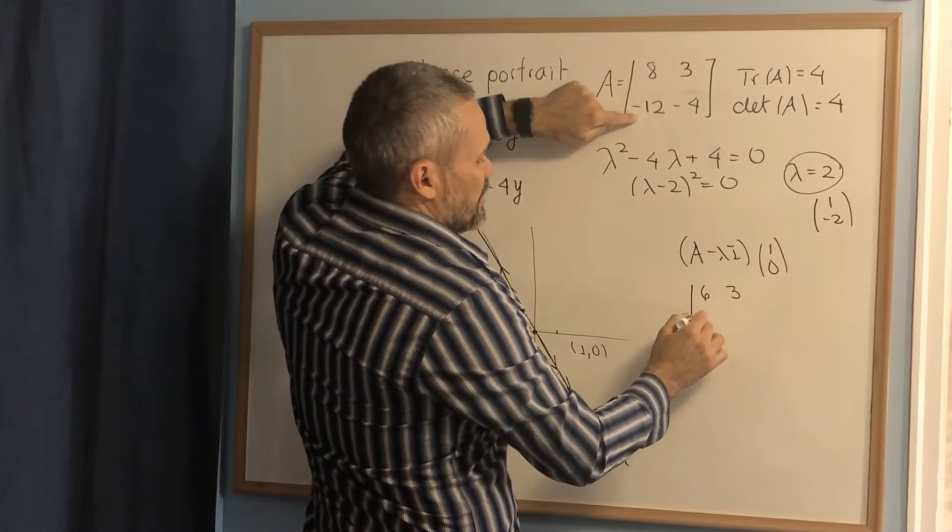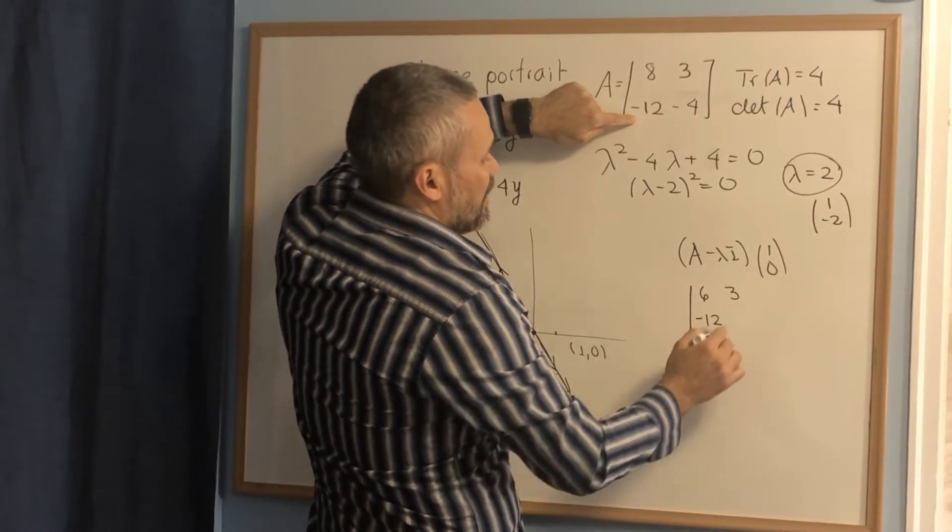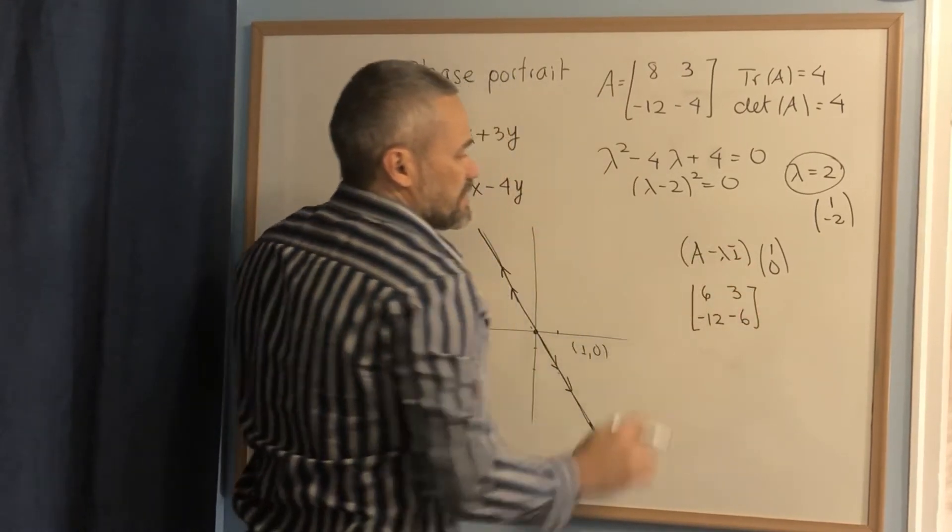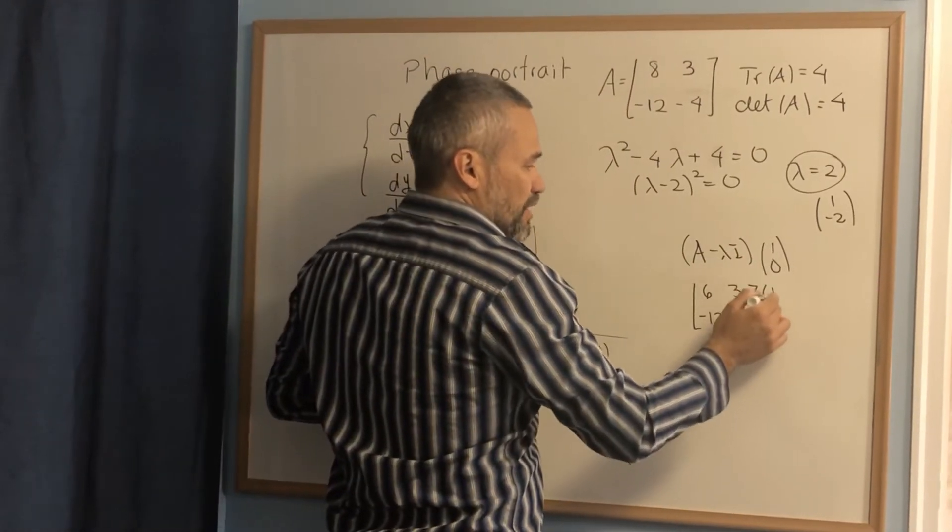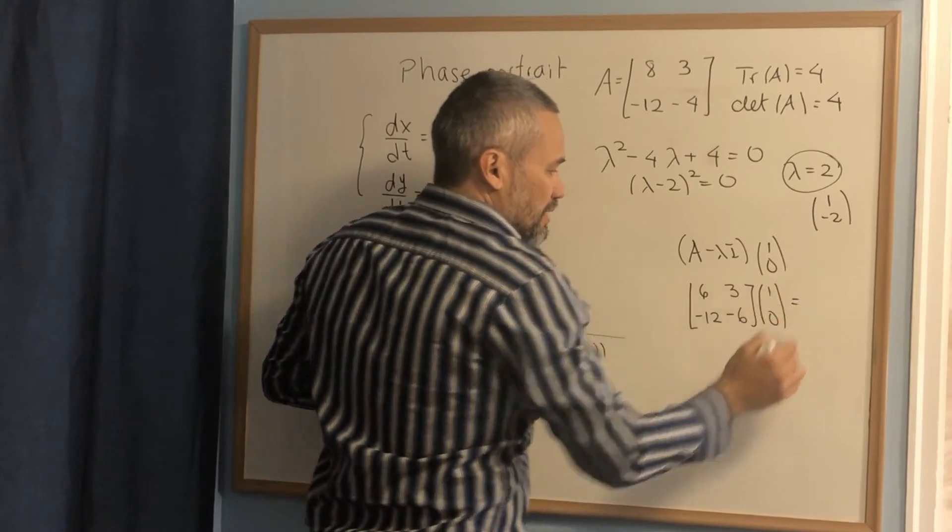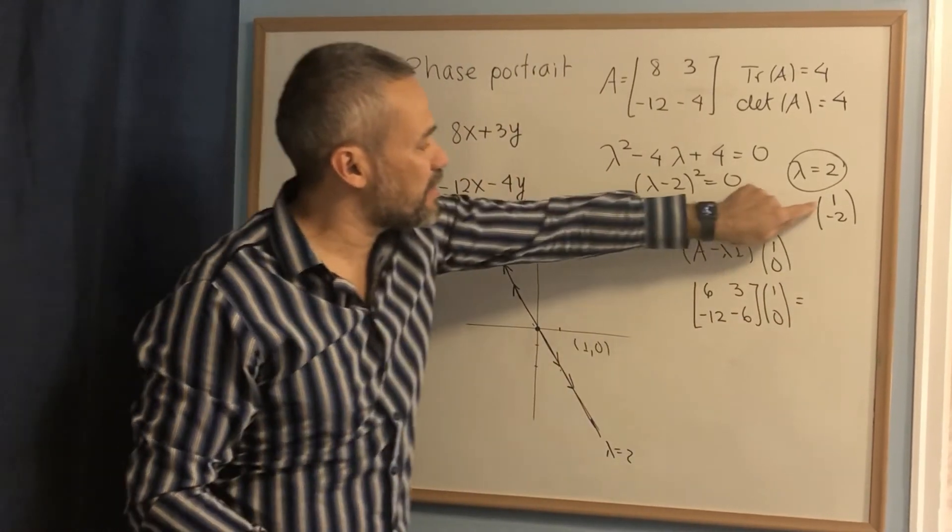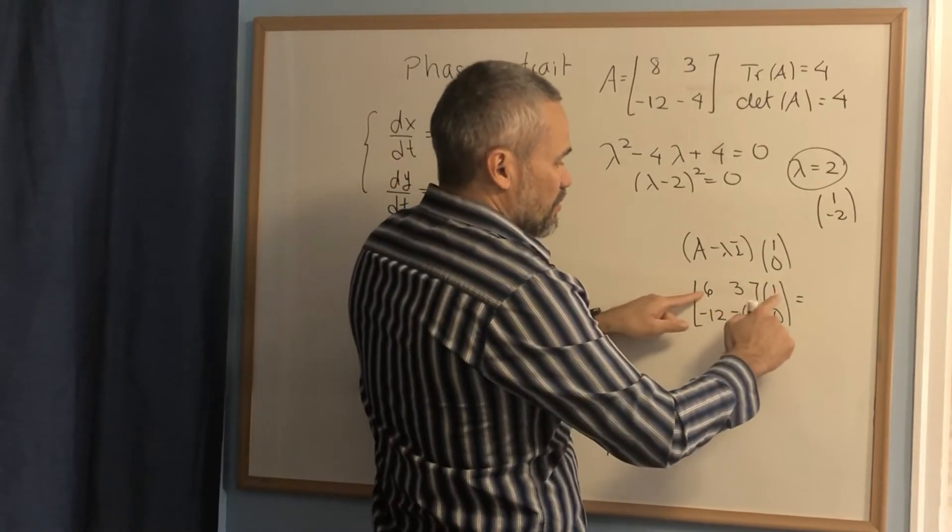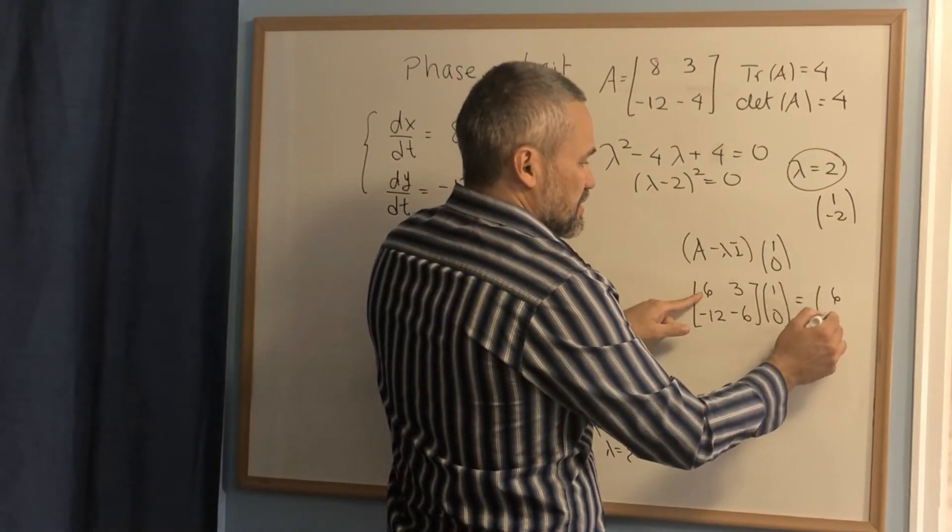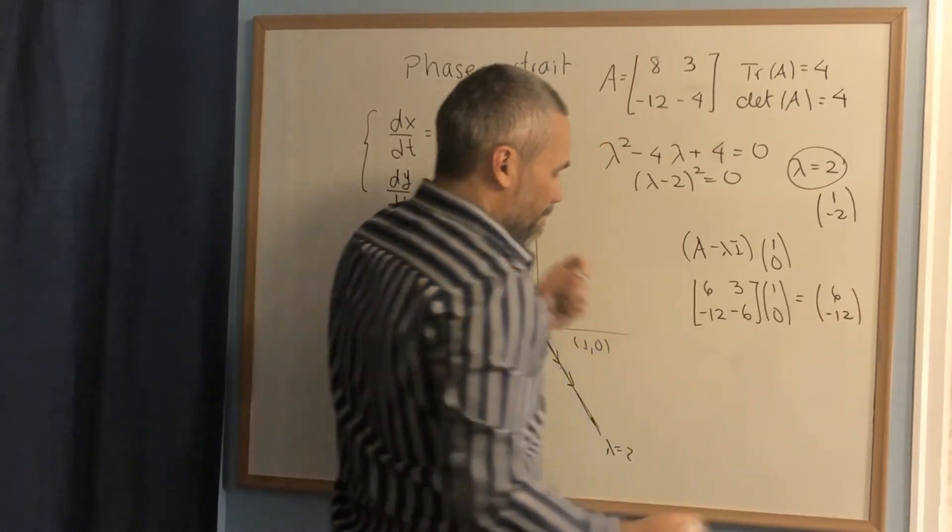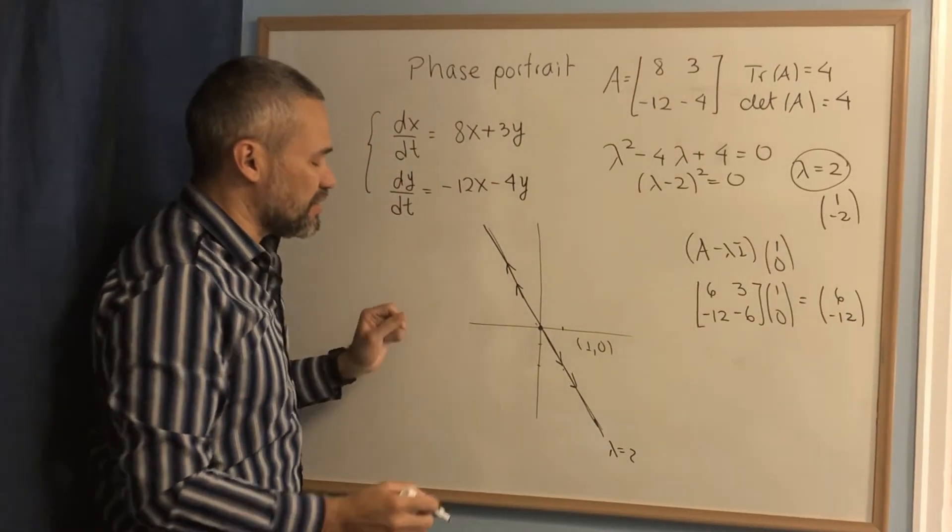Remember that I is the identity matrix, times 1, 0. Then we get this vector. The vector that we're going to get is supposed to be parallel to this vector. When we do this product, we get the vector 6, negative 12.